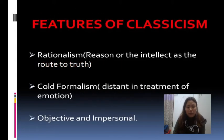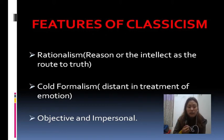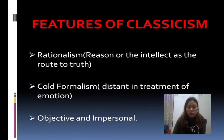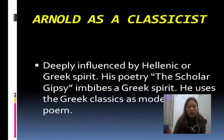The features of classicism are: rationalism — these are people who think with the head and not with the heart, unlike the romantics. Next is cold formalism, meaning they are disdainful in their treatment of emotions. In romanticism you find feelings and emotions, whereas cold formalism and objectivity and impersonality are features of classicism.